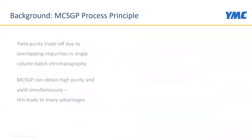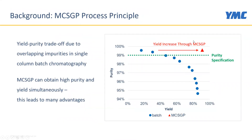MCSGP solves this challenge. It keeps the high purity but increases the yield — it stays above the purity specification and simply increases the yield. It does so by using internal recycling of the impure side fractions. This yield-purity trade-off from overlapping impurities is cancelled by MCSGP, which can obtain high purity and high yield simultaneously, leading to many advantages I will show you in this presentation.